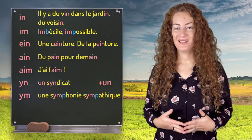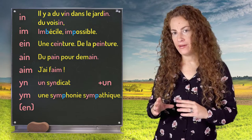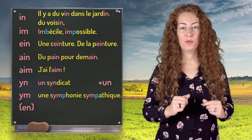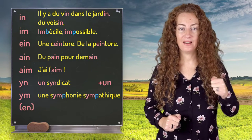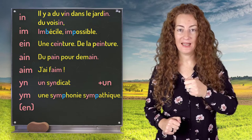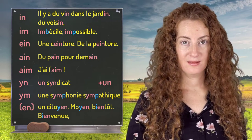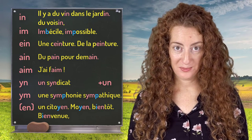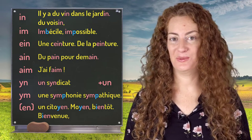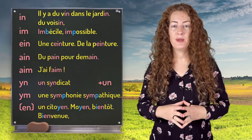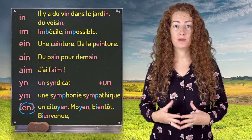And to finish with this sound, you can also write it Y-E-N or I-E-N, but it's very rare — only when you have an E or Y before. For example: un citoyen, moyen, bientôt, bienvenue. But be careful — remember that when you see E-N, most of the time it is pronounced AN.